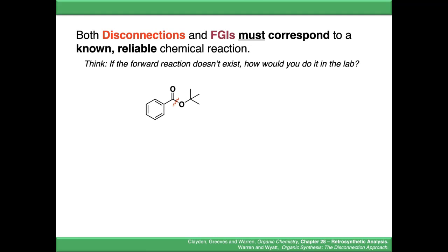If we take this molecule as an example, this is a reliable disconnection. That's the disconnection we've just seen. We know we can disconnect an ester back to a carboxylic acid and an alcohol, because that's Fisher esterification. That is a known reliable chemical reaction.